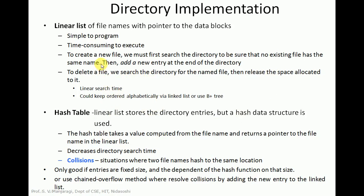Let us begin with linear list. Linear list is basically a linked list implementation of the directory. In the linear list we maintain different nodes containing file name and pointer to the data blocks. A node in the linked list contains the name of the file and pointer to the data blocks. This linear list is basically containing a list of file names. It is very simple to program, but it is time consuming to execute.